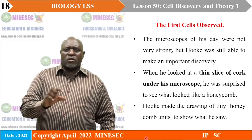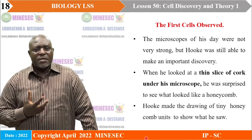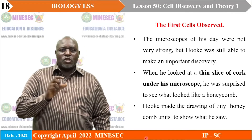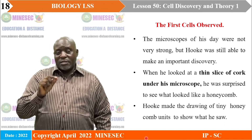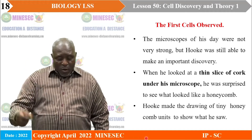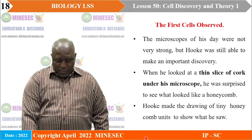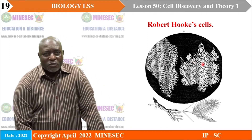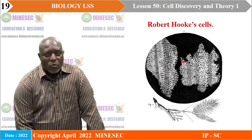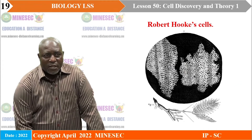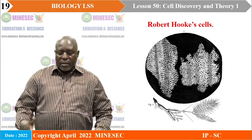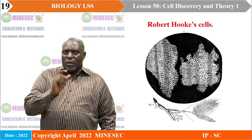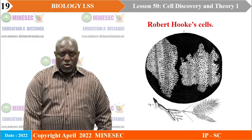When Hooke looked at a thin slice of cork under the microscope, he was surprised to see what looked like a honeycomb. He made a drawing of those tiny honeycomb cells to show what he saw, so other scientists could see what he observed within the cork cells. Those are the cork cells — if you look at cork with the naked eye you cannot see these tiny cells, but under the microscope, even with that early instrument, he was able to see these magnificent structures called cells.